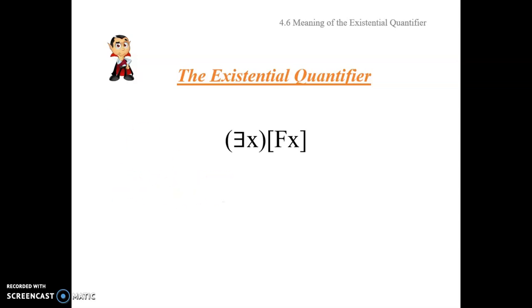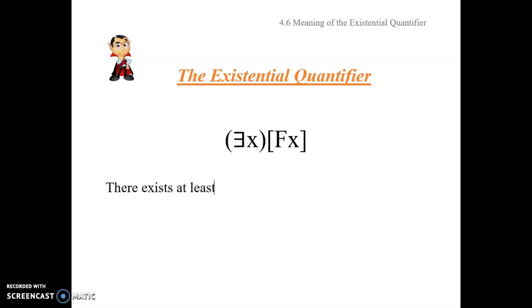Officially, we're going to render it something like this — this will be our official rendering for our textbook. If you're using a different textbook or a different professor, you should check with them precisely how they prefer it rendered. But we're going to render it: there exists at least one thing, one x in the domain satisfying this description.